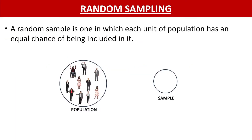Now coming to random sampling. A random sample is one in which each unit of the population has an equal chance of being included in it. For example, consider a population of 10 persons and we want a sample size of 3. We randomly select any 3 persons without any bias and they form part of the sample. This is what is called random sampling.